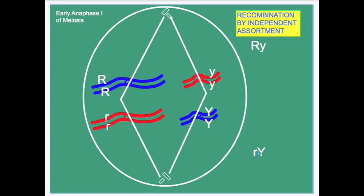Recombinants, as they're called, are the result of the random assortment of chromosomes, and this law is valid when these genes are located on separate chromosomes. But what if the gene for the texture of the coat and the color of the seed were located on the same chromosome? What if they were linked?